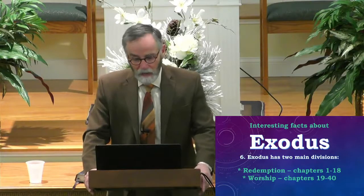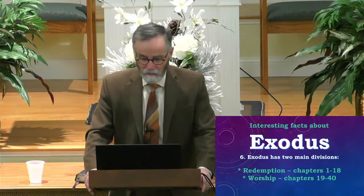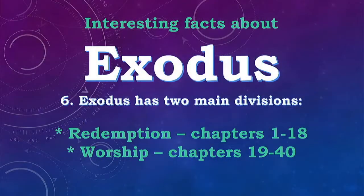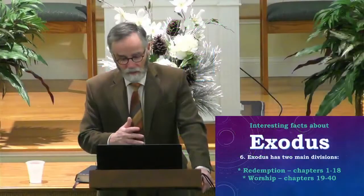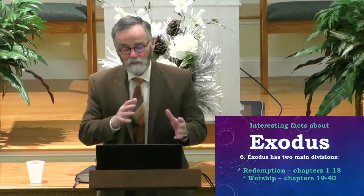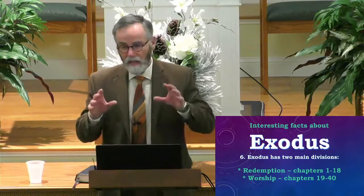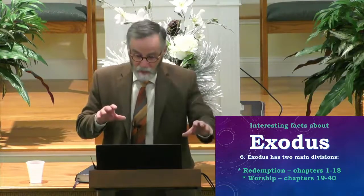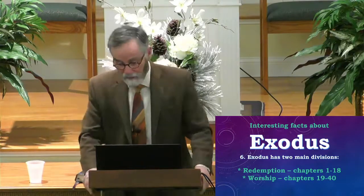Exodus has two main divisions. One might be titled 'Redemption' in chapters 1 through 18, and the second 'Worship' in chapters 19 through 40. We're going to give a whirlwind tour of those chapters in the next couple of weeks. There's pretty much agreement between commentators — while they might slice the pizza slightly differently, they all have these two main sections: redemption in the first half and worship in the second half of the book.